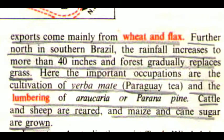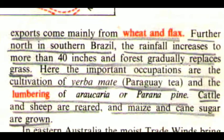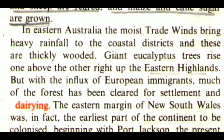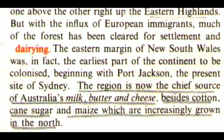Further north in southern Brazil, the rainfall increases to more than 40 inches and the forest gradually replaces grass. Here, the important occupations are the cultivation of yerba maté and the lumbering of araucaria or Parana pine. Cattle and sheep are reared and maize and cane sugar are grown. In eastern Australia, the moist trade winds bring heavy rainfall to the coastal districts and these are thickly wooded. Giant eucalyptus trees rise one above the other right up the eastern highlands. But with the influx of European immigrants, much of the forest has been cleared for settlement. The eastern margin of New South Wales was in fact the earliest part of the continent to be colonized. Beginning with Port Jackson — the present site of Sydney — the region is now the chief source of Australia's milk, butter and cheese, besides cotton, cane sugar and maize, which are increasingly grown in the north.